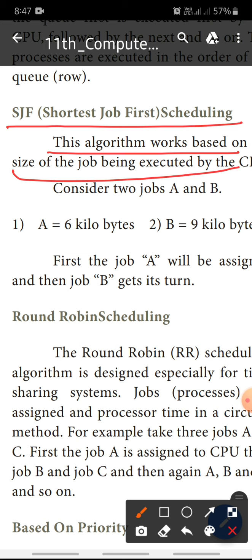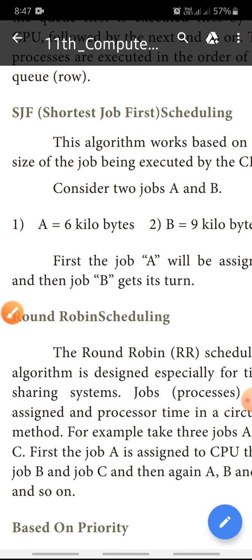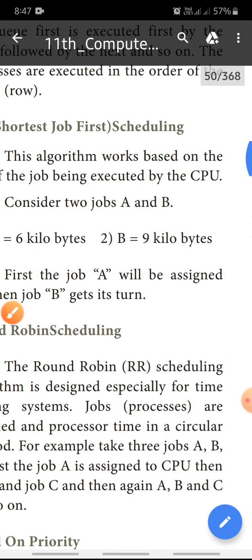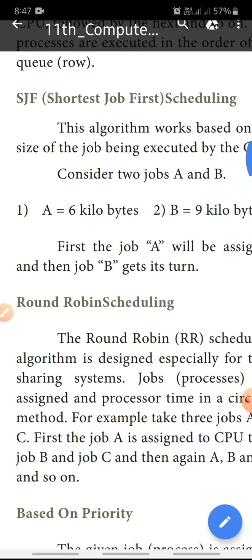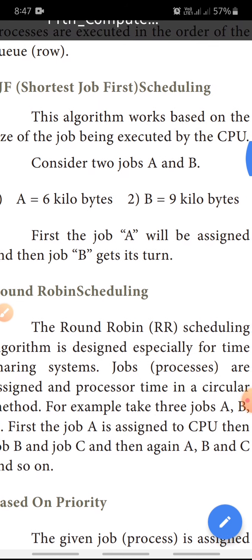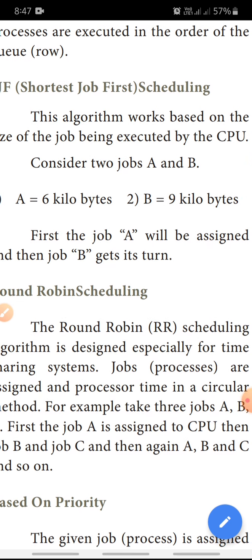This is the Shortest Job First scheduling. This algorithm works based on the size of the job being executed by the CPU. Consider two jobs A and B.